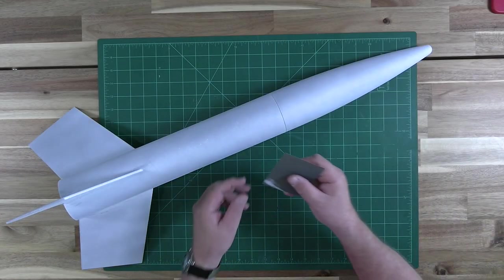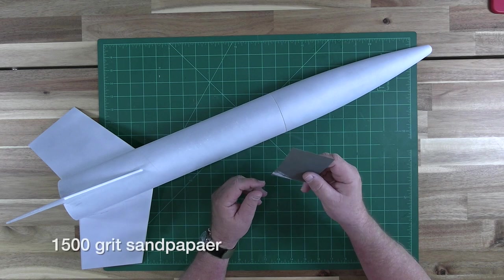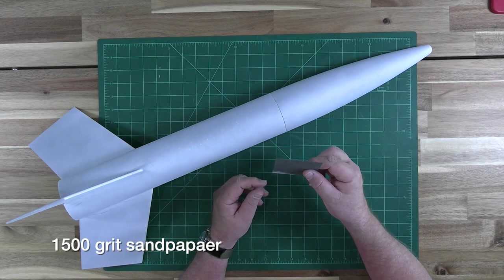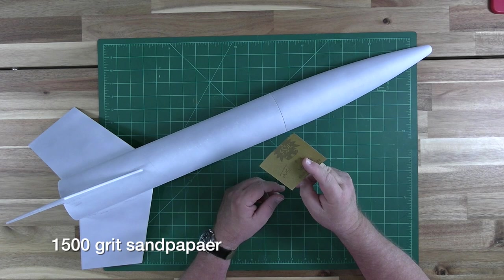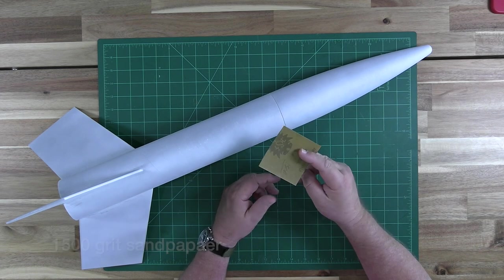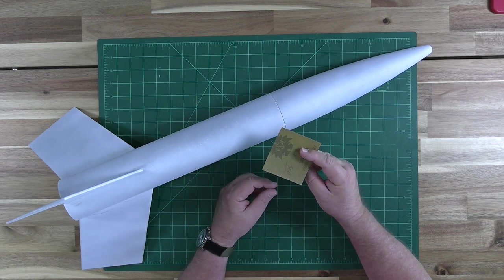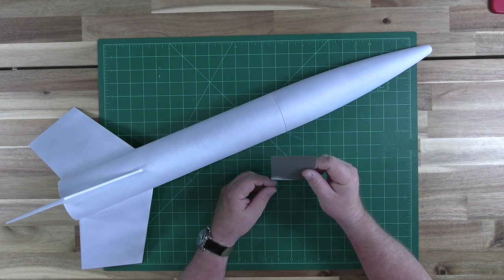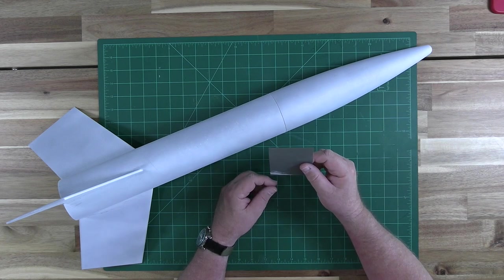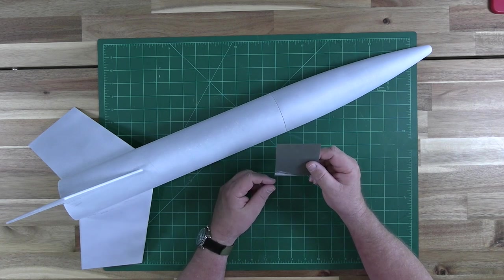Our Tamiya primer has cured and we're going to sand the whole model down with 1500 grit sandpaper. Now this is not something you typically find at Home Depot or Lowe's, but it is still pretty easy to find. You can either go to an automotive paint supply store or it's routinely available on Amazon.